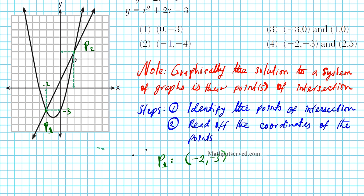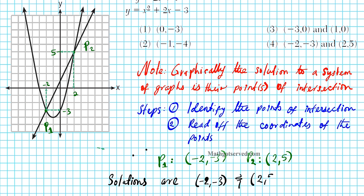For the second point, P2: tracing to the x-axis gives us 2 for x. Tracing to the y-axis gives us positive 5. So P2 has coordinates of 2, 5. Since the points of intersection of the two graphs are our solutions, those are what we put down. Solutions are negative 2 comma negative 3, and 2 comma 5.